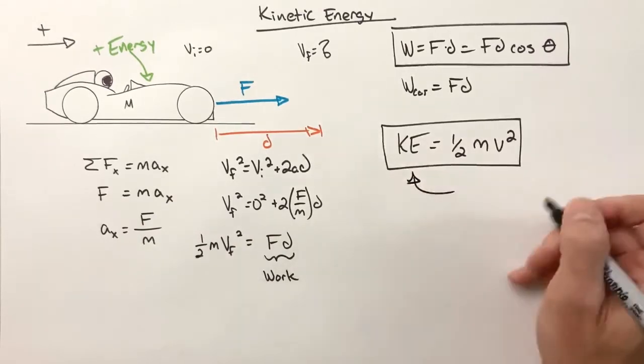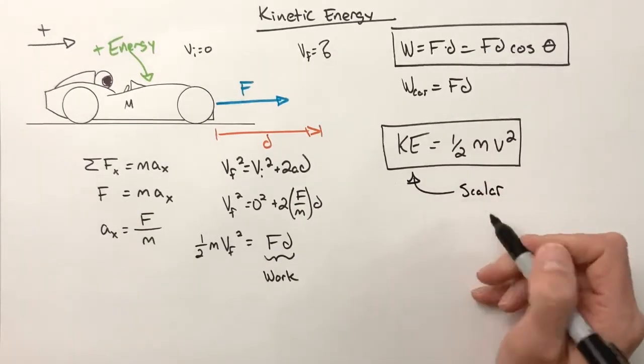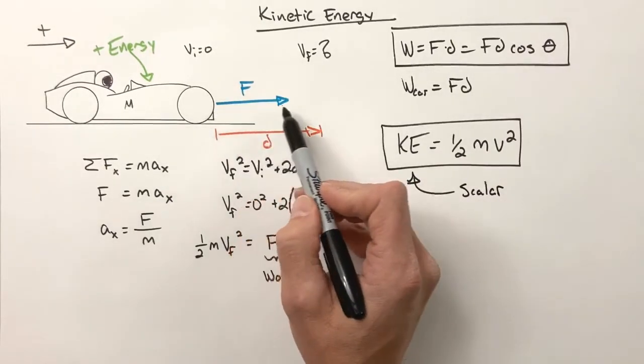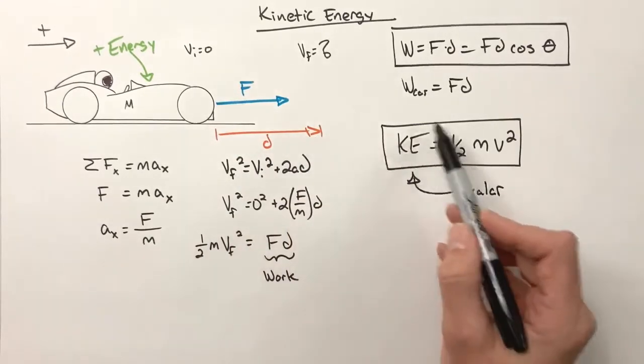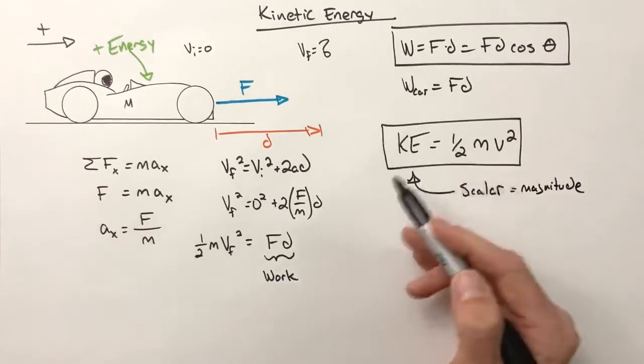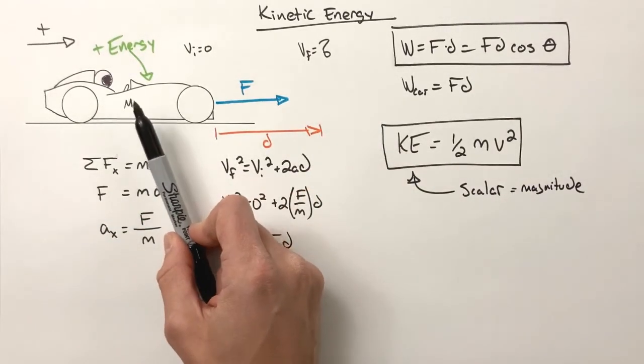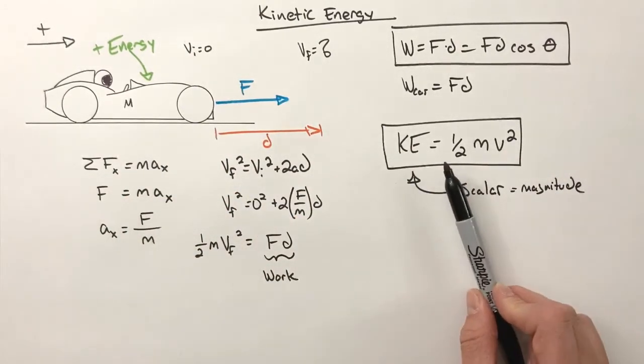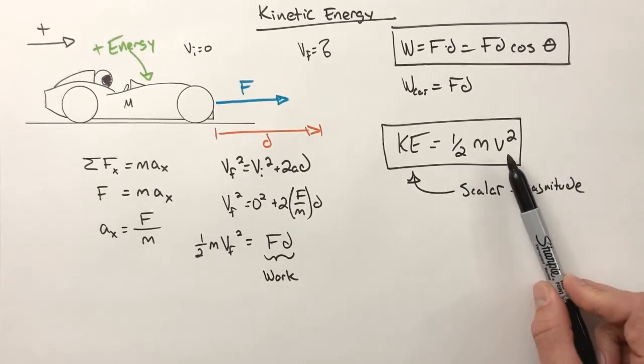The consequence of this is kinetic energy, and really all energy, is what we call a scalar. A scalar is the opposite of a vector. A vector has both magnitude and direction, something like force has a direction, displacement has a direction. Energy, it has just a magnitude. We call it a scalar, it has no direction. The car moving to the right with a certain amount of energy is no different than the car moving to the left with the same amount of energy.